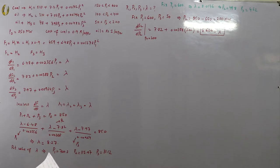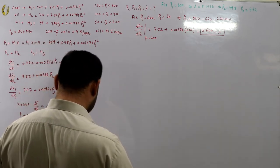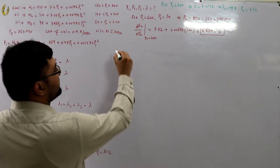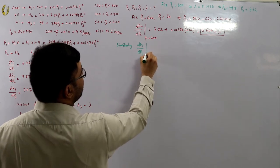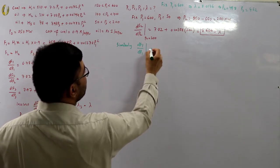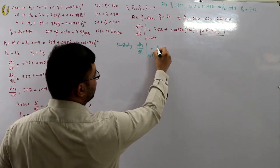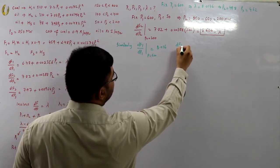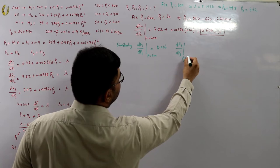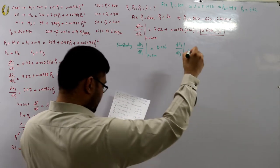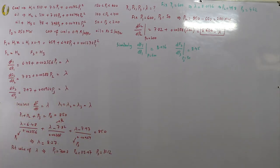Computing the incremental costs at the fixed values: df1/dp1 at p1 = 600 gives λ₁ = 8.016, and df3/dp3 at p3 = 50 gives λ₃ = 8.45. Lambda (from p2) is 8.626.